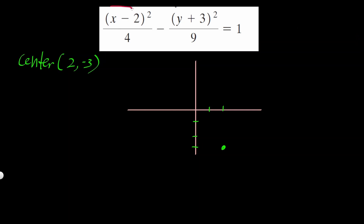The positive value — where x-something is positive and y-something is negative — the positive value underneath is going to be a squared. I'll call it a squared equals 4, which means a is 2. That 2 is underneath x, so that determines how you go left and right. I'm going to go left 2 units and right 2 units.